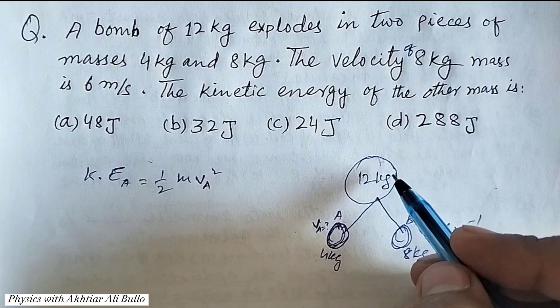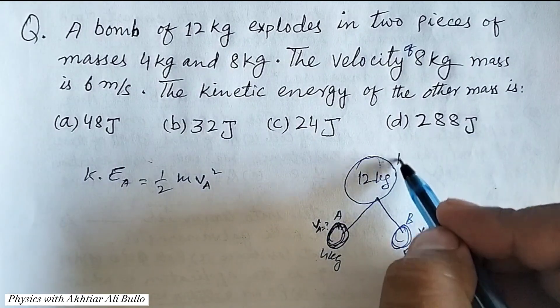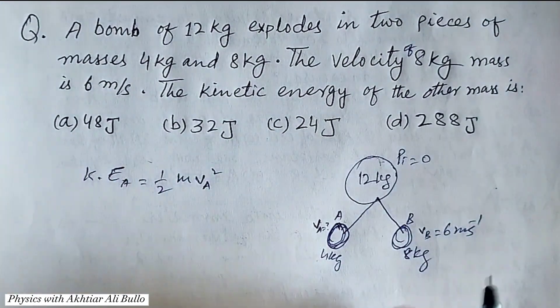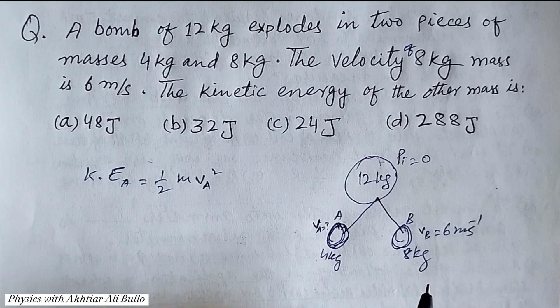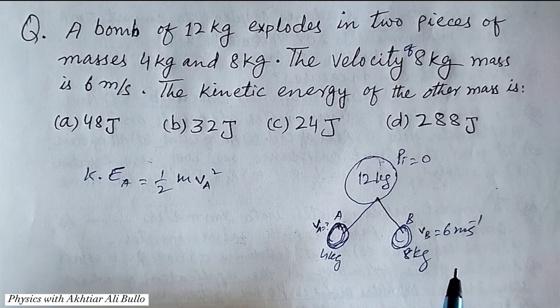The bomb is initially at rest, so its initial momentum is 0, and after explosion in two parts, it should possess numerically equal momentum.